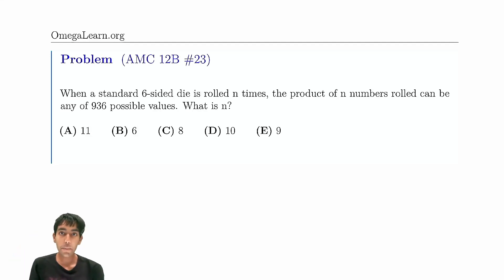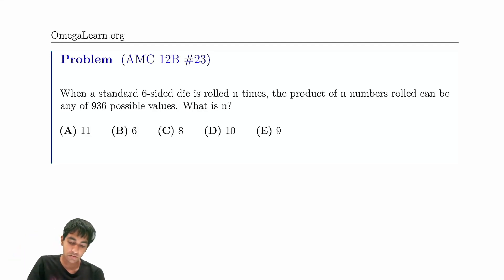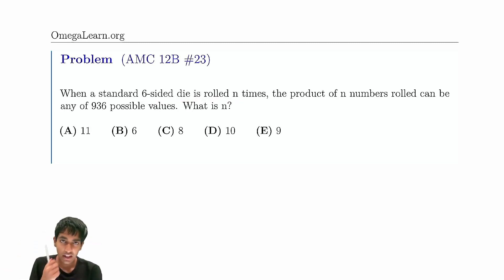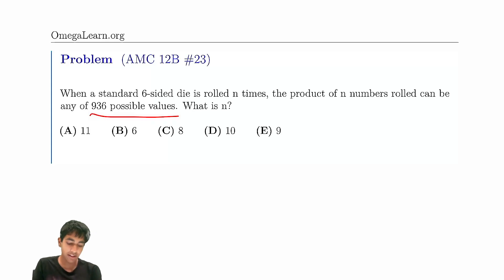Let's now tackle number 23 on the 12B. A standard six-sided die is rolled n times. The product can take 936 values. Find n.